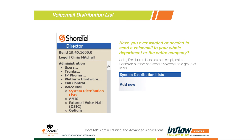The next topic we're going to talk about is voicemail distribution lists. There are two ways to use them. The first is sending a voicemail out to all of your engineering team, or sending one out to the whole company — for example, congratulations on winning contact center partner of the year. We can do that with voicemail distribution lists, and there are two ways to accomplish this.